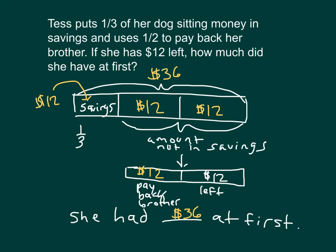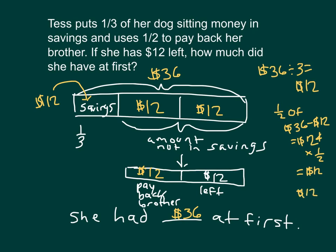Let's check our answer. If she had $36 at first, she puts one third of 36, which is 36 divided by 3, which equals $12 into savings. Then she uses half of the remaining to pay back her brother. That's one half of what's remaining, which is $36 minus $12, which would be $24. One half of $24 is $12. That's how much she pays back her brother, and she still has $12 left. That's right from the problem. I've checked it where we have those different amounts, and I had started with the $36 at first to check that value.